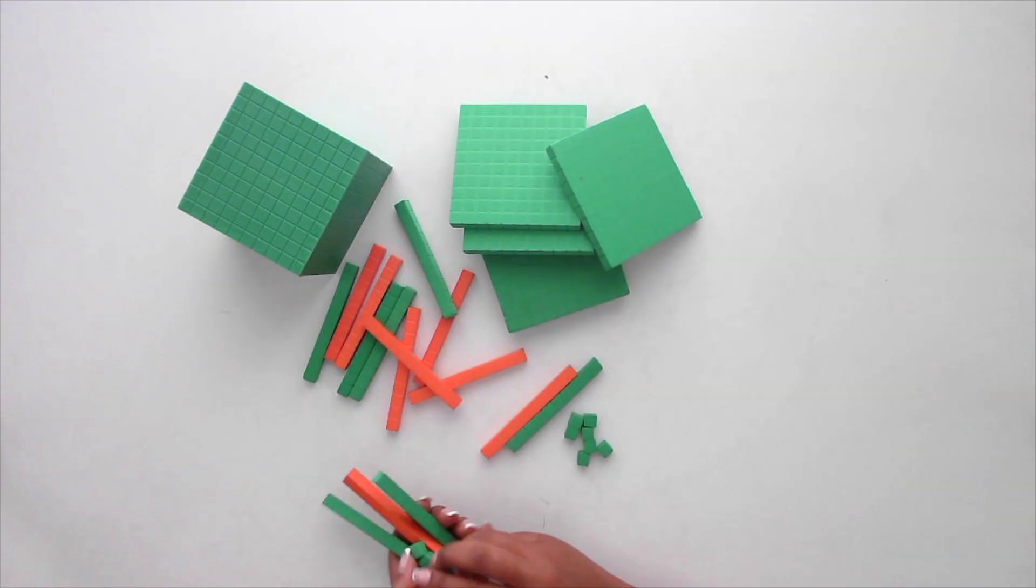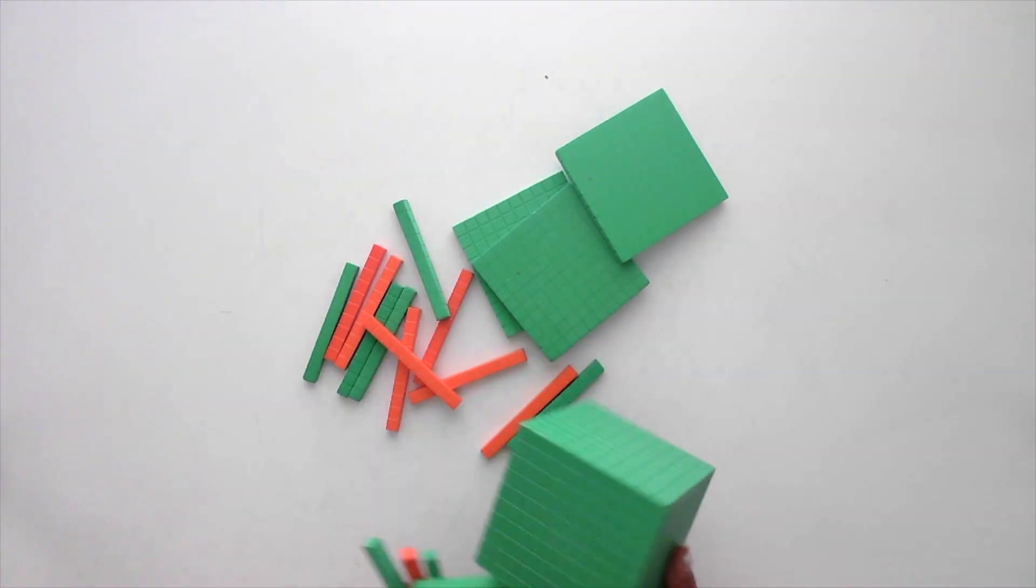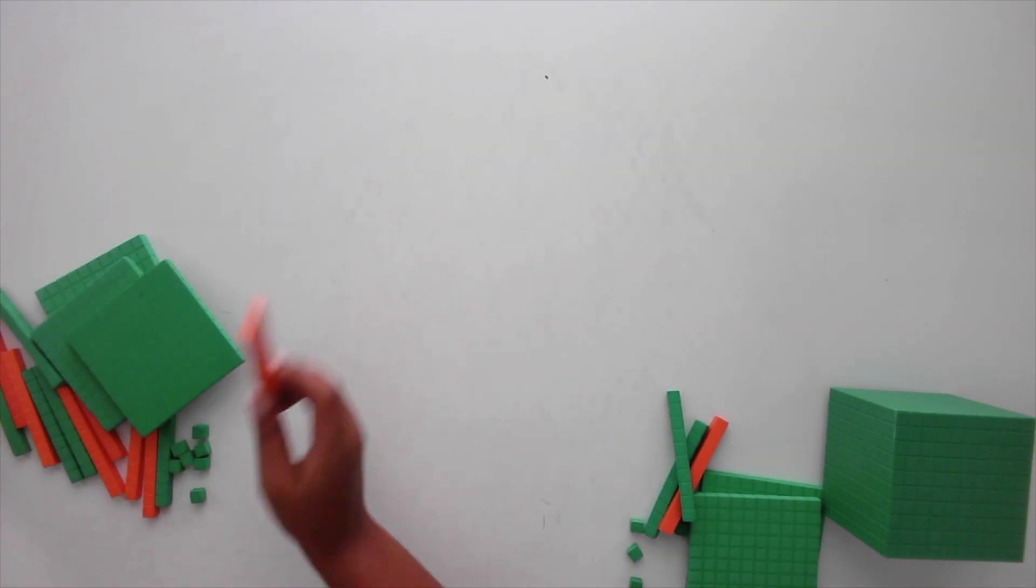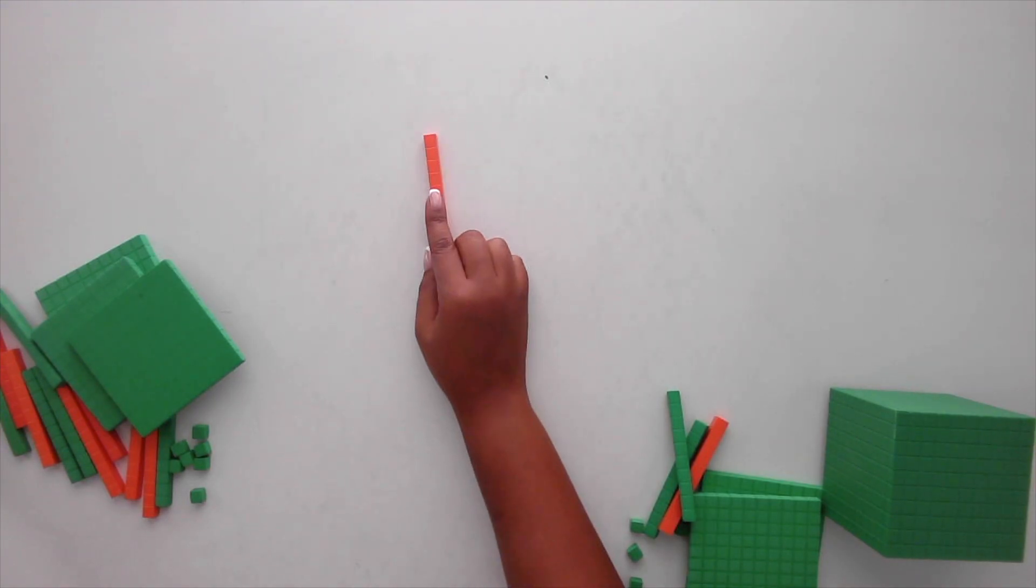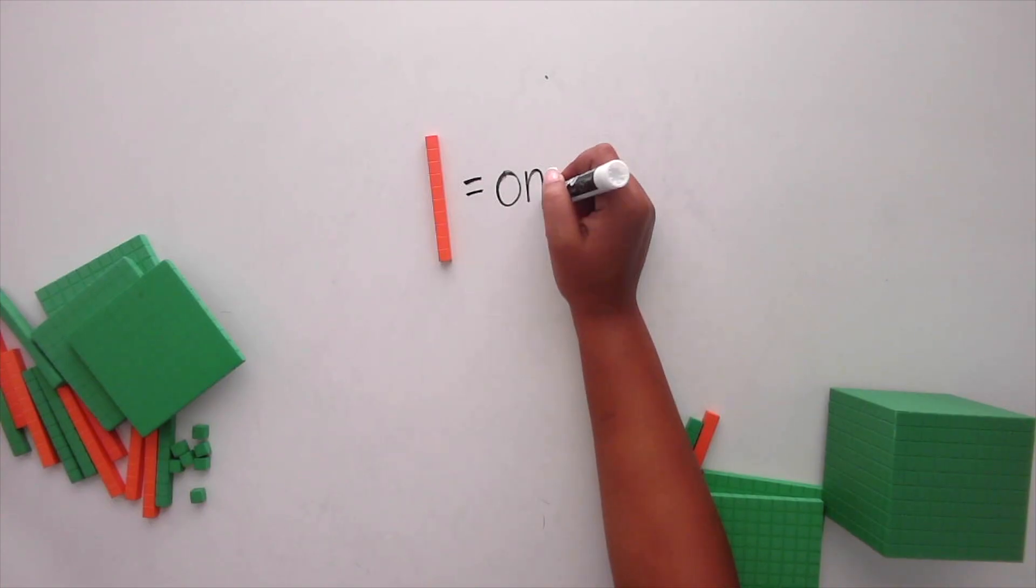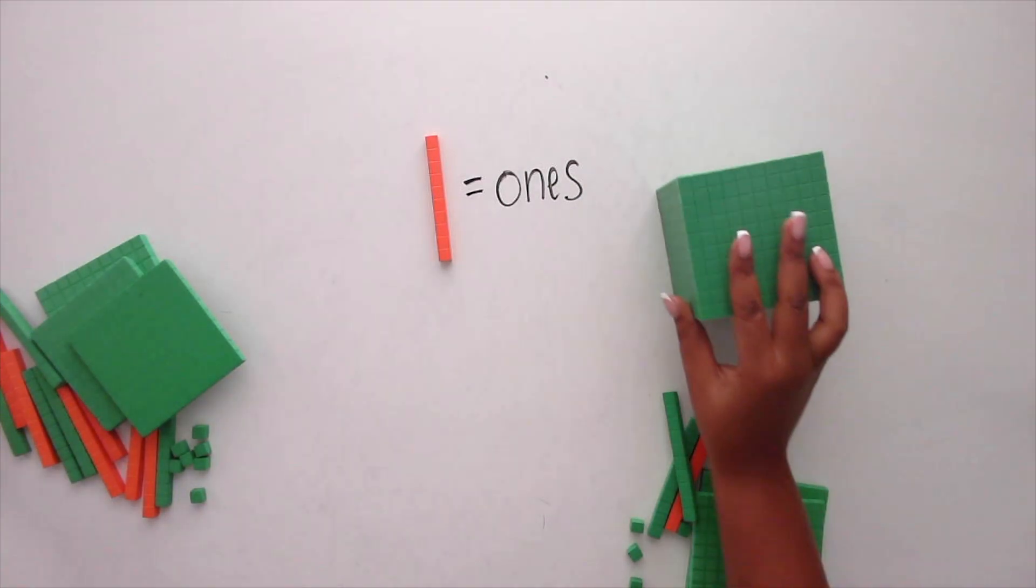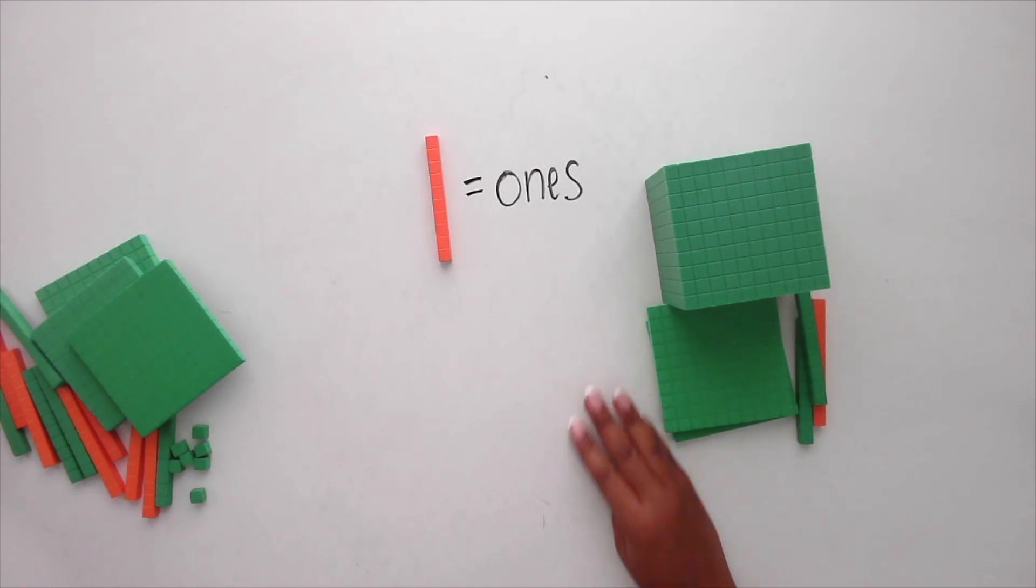Here's how it works. Have your students gather a mix of base 10 blocks. Secretly choose one block to represent the ones place and hide it behind your back. Then reveal the block. For example, if you show a rod as the ones, the rest of the blocks fall into place based on that choice. Students then have to determine the value of the mix of blocks based on which block was chosen as one whole.